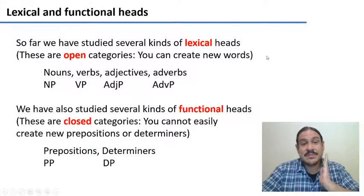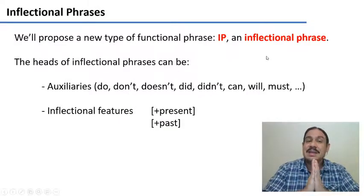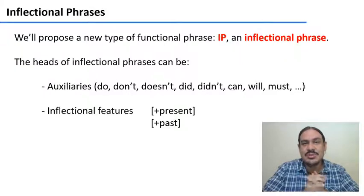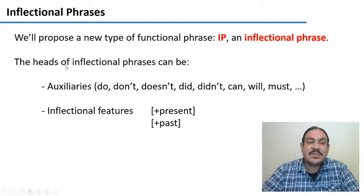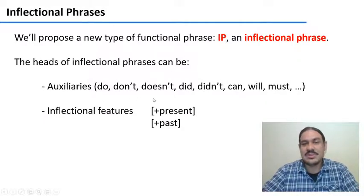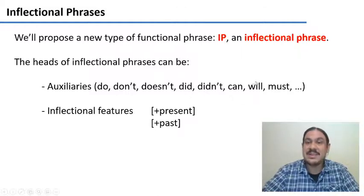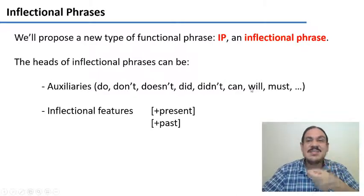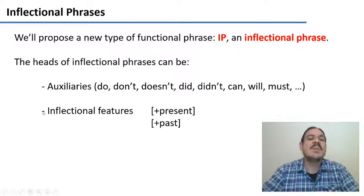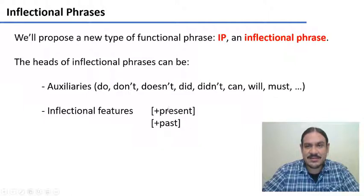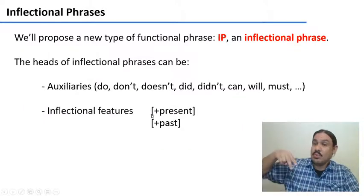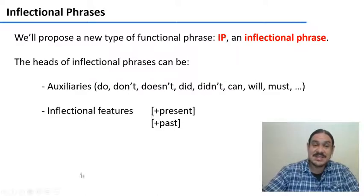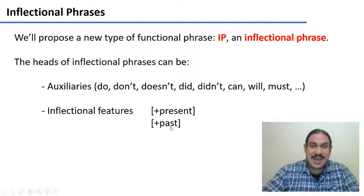So we have studied all of these types of heads and phrases. Let's suppose a new type of phrase — we're going to call it IP, or inflectional phrase. An inflectional phrase is one where the head is an auxiliary like 'do,' 'don't,' 'did,' 'can,' or 'will,' precisely because they carry inflectional information about tense, aspect, mood, and so forth. You can also have features as the head of the inflectional phrase — for example, if a verb is 'walks,' its inflection is in the present tense; if a verb is 'walked,' its inflection is in the past tense.